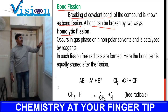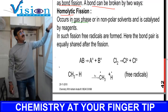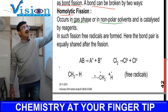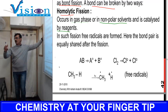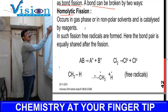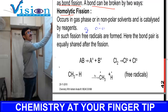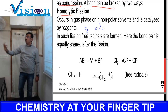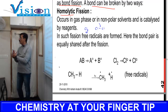Homolytic fission occurs in the gaseous phase or in a non-polar solvent. For example, take chlorine (Cl2) — there is a bond between the two chlorine atoms. Suppose this bond breaks — let's discuss how and why it breaks.